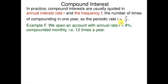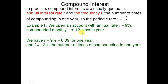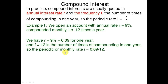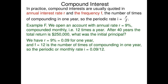Example: we open an account with annual rate r equal to 9 percent compounded monthly, so f equals 12 times a year. We have r = 0.09 for one year and f = 12, so the periodic or monthly rate i equals 0.09 over 12.